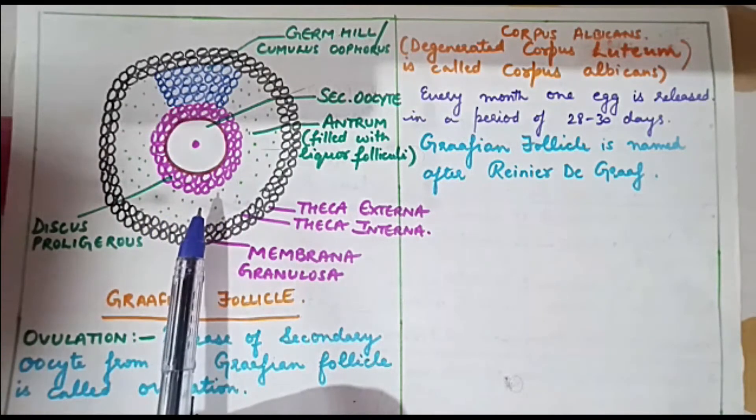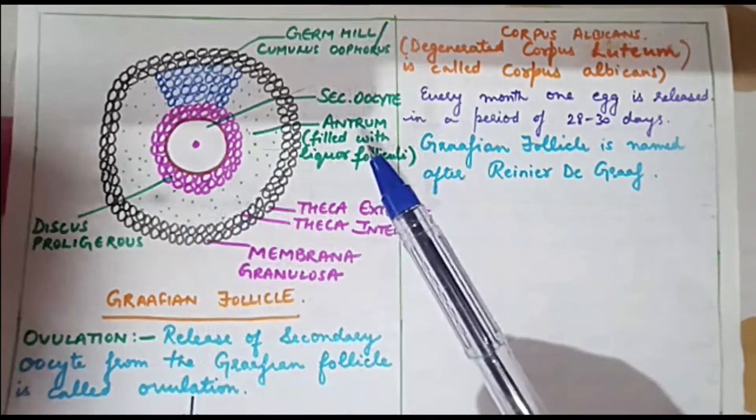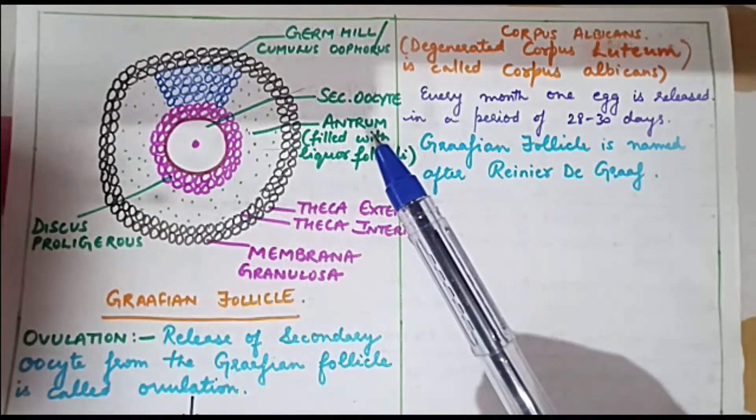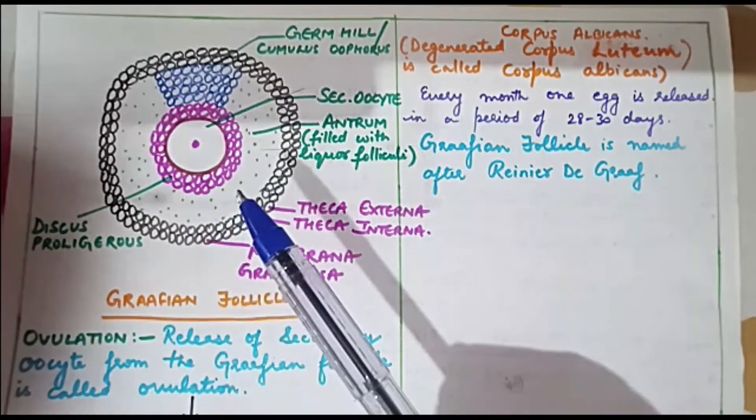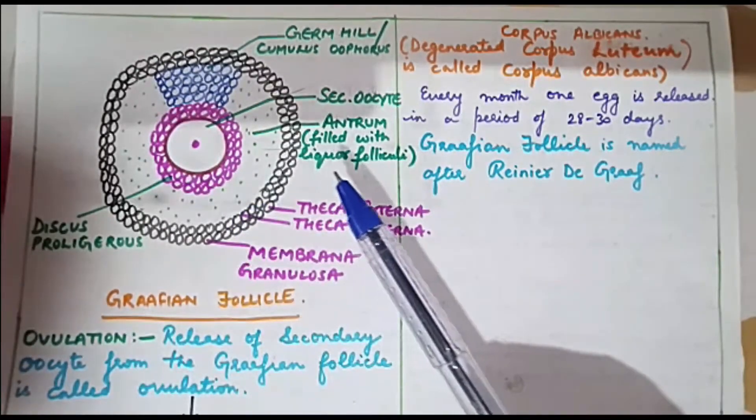Outside discus proligerus there is a cavity which is known as antrum. Antrum is not empty, it is filled with a liquid which is called liquor folliculi.